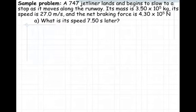In this sample problem, a 747 jetliner lands and begins to slow to a stop as it moves along the runway. Its mass is 3.50 times 10 to the 5th kilograms, its speed is 27 meters per second, and the net braking force is 4.30 times 10 to the 5th newtons. What's the speed 7.50 seconds later?